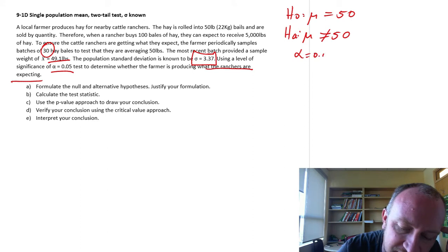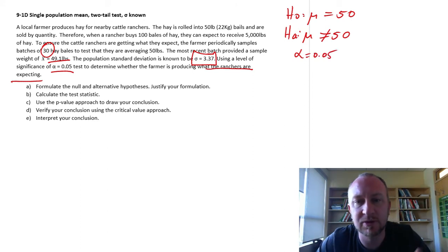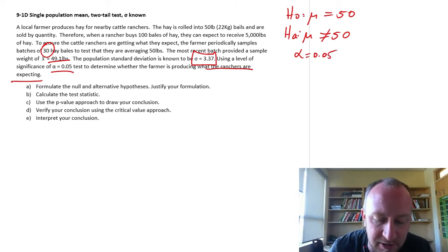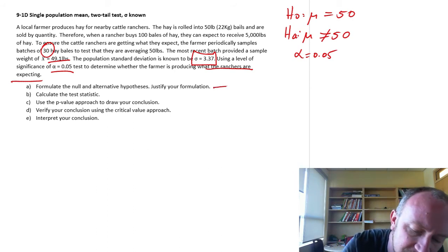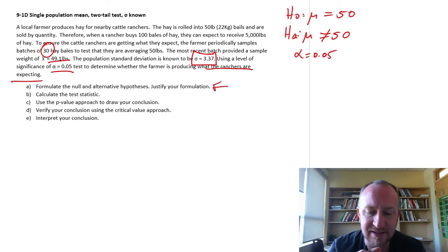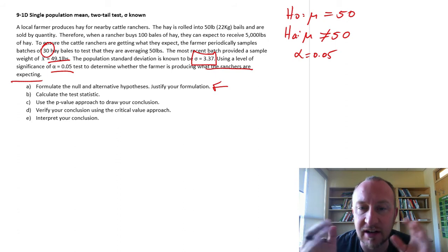Alpha level of significance 0.05. Comfortable with a 5% chance of committing a type 1 error. So there we have our hypotheses.